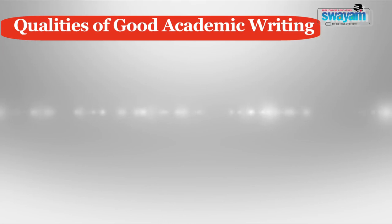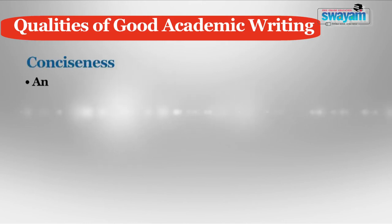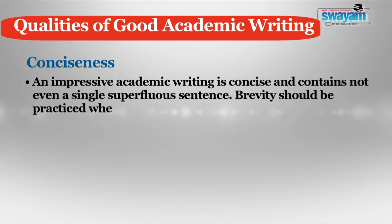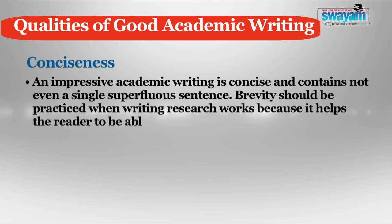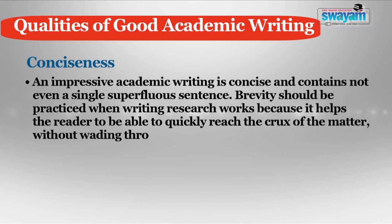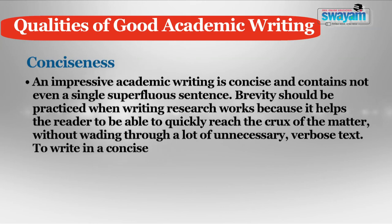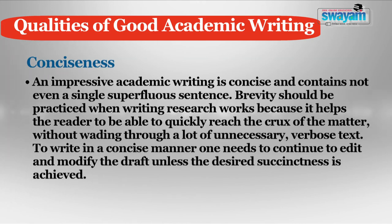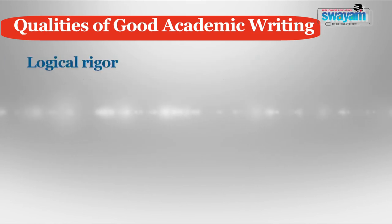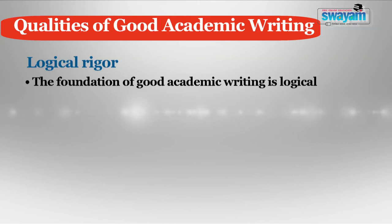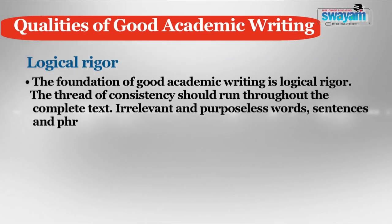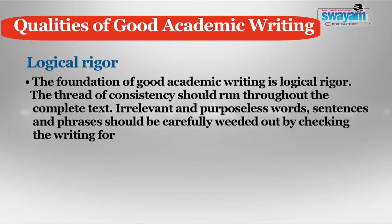Dear learners, now we come to discuss the qualities of good academic writing. The first quality is that of conciseness. An impressive academic writing is concise and contains not even a single superfluous sentence. Brevity should be practiced when writing research works because it helps the reader to quickly reach the crux of the matter without wading through a lot of unnecessary verbose text. To write in a concise manner, one needs to continue to edit and modify the draft unless the desired succinctness is achieved. The second quality is that of logical rigour. The foundation of good academic writing is logical rigour. The thread of consistency should run throughout the complete text. Irrelevant and purposeless words, sentences and phrases should be carefully weeded out by checking the writing for thoroughness.